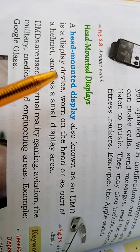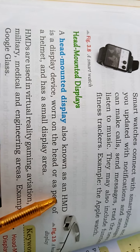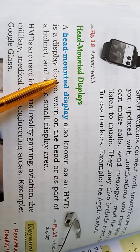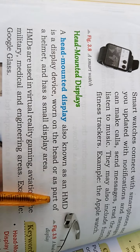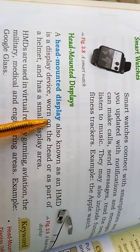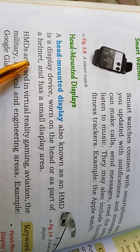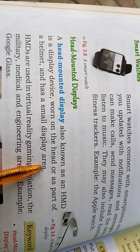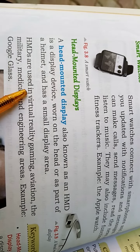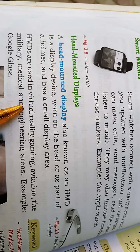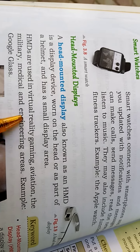After that, the head-mounted display, also known as an HMD, is a display device worn as part of a helmet. It is used as a small display worn on the head. HMDs are used in virtual reality gaming, aviation, military, medical, and engineering areas.